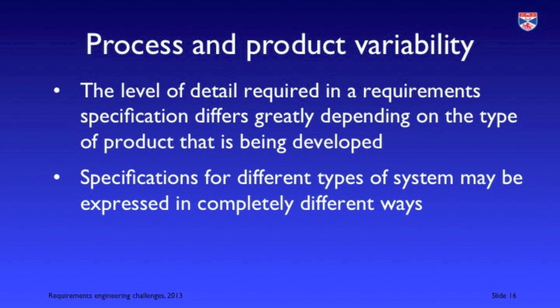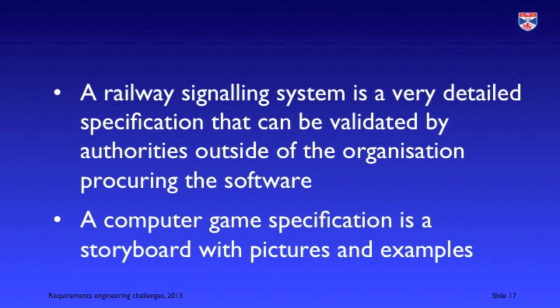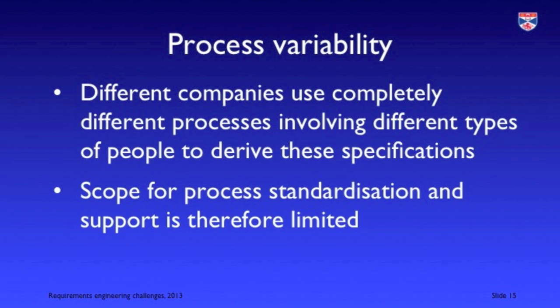When it comes to requirements, the problem is that the level of detail needed in a requirements specification varies quite dramatically from one area to another. A safety critical system needs an immense amount of detail; a game is something quite different, where requirements are often expressed as a storyboard with pictures of what might be happening. Because of that, it's very hard to learn from others and to come up with product and process standards that encapsulate good practice. So essentially every organisation is on its own in deriving an effective requirements engineering process.